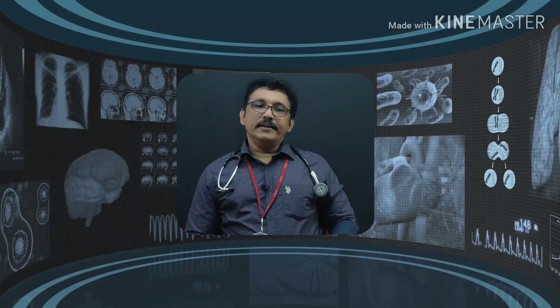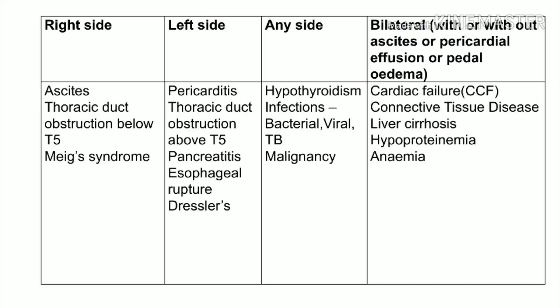Right-sided pleural effusion is classically seen in ascites, thoracic duct obstruction below T5, and Meig's syndrome. Left-sided pleural effusion is classically seen in pericarditis, thoracic duct obstruction above T5, pancreatitis, esophageal rupture, and Dressler's syndrome. Any side can be affected in hypothyroidism.